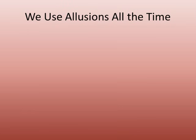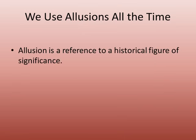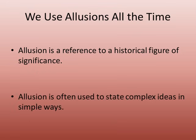So we use allusions all the time. Allusion is a reference to a historical figure of significance, and it's often used to state complex ideas in simple ways. I hope that short lesson on allusions was helpful. It didn't cover everything, but it certainly covered the basics so that you have a better idea of what an allusion is and some examples of how it's used in literature. Hope that was helpful — have a wonderful day.